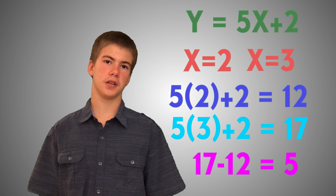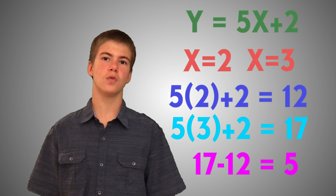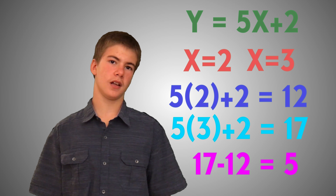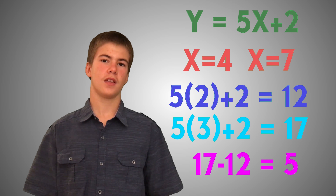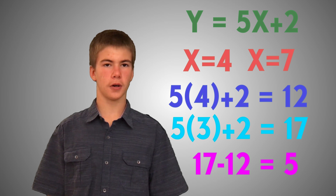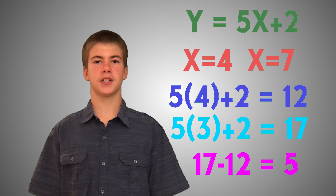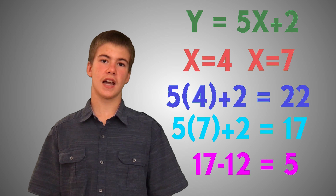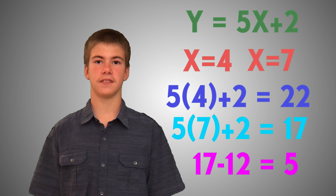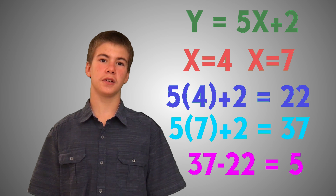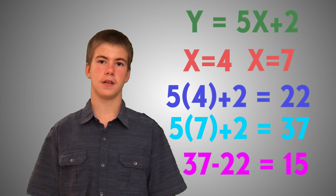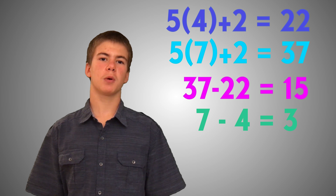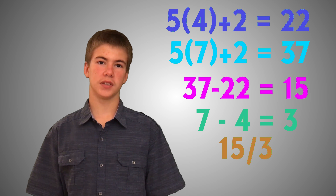Let us try plugging in two non-consecutive values — for example, 4 and 7. If I plug in 4, I multiply 5 times 4 getting 20, then add 2 getting 22. When I plug in 7, I multiply 5 times 7 getting 35, then add 2 making the total 37. If we subtract the two outputs, we clearly don't get 5 — we get a difference of 15. Notice the relationship: the difference between 7 and 4 is 3. And when we divide 15 by 3, we once again get 5.